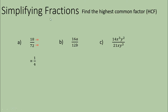The second fraction, 16a over 12b, is an algebraic fraction — notice the variables a and b. Nonetheless, we simplify it the same way. We find the highest common factor. When there are numbers and variables involved, you should look at both. In this case, we can only find a number as the highest common factor: 16 and 12 can both be divided by 4. 16 divided by 4 is 4, and 12 divided by 4 is 3, so our simplified fraction is 4a over 3b.